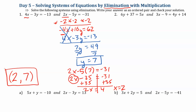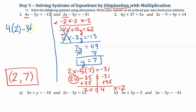I'm going to go back and check my work. I go up to my first equation: 4 times x, which is 2, minus 3 times y, which is 7, should equal negative 13. 4 times 2 is 8, minus 3 times 7 is 21, and 8 minus 21 does equal negative 13. So my solution checks.